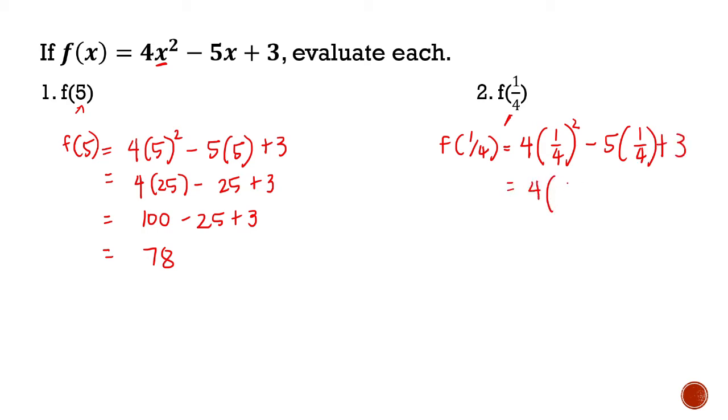1/4 squared is, okay, if we are raising a fraction to an exponent, we distribute the exponent to both the numerator and denominator. So 1 squared is 1, 4 squared is 16, minus 5 times 1/4 plus 3. Simplifying further, this will be 4/16 minus 5/4 plus 3. 4/16 is simply 1/4 minus 5/4 plus 3.